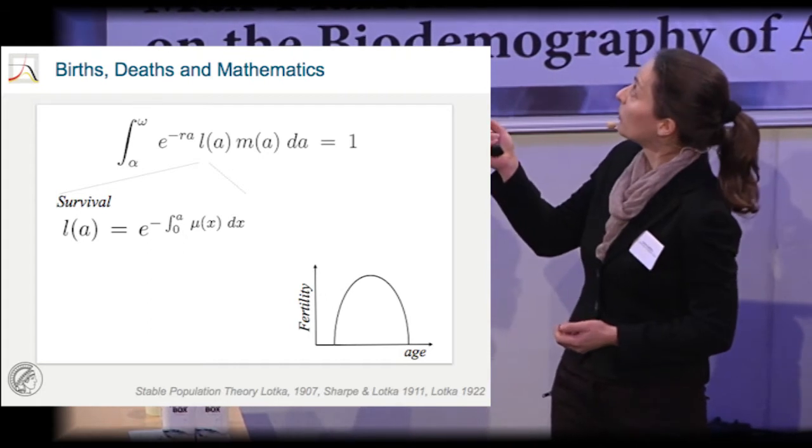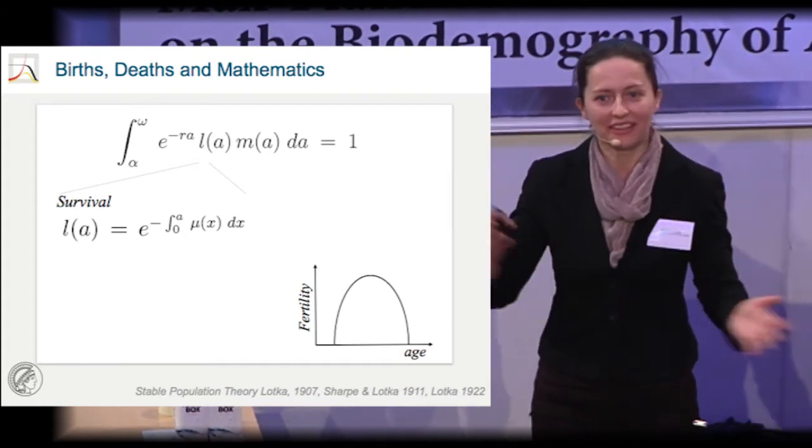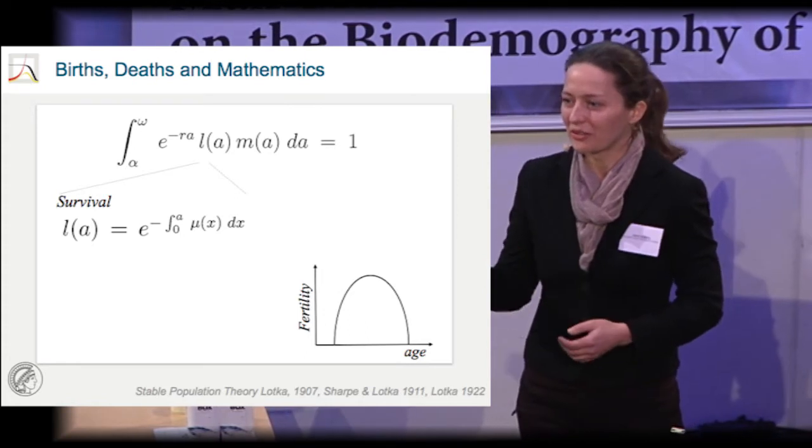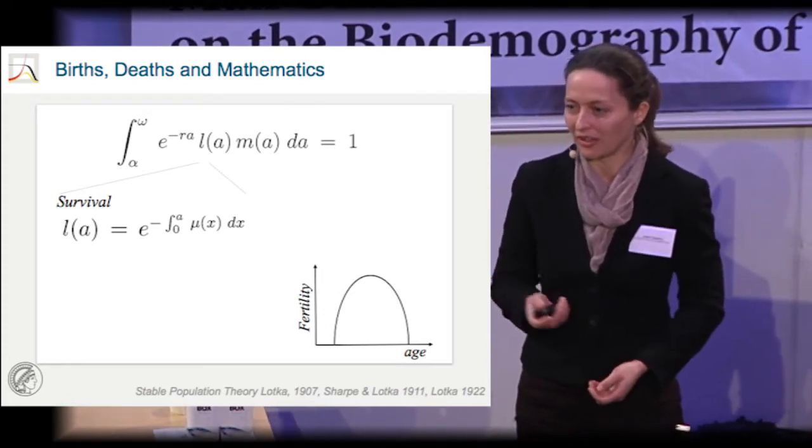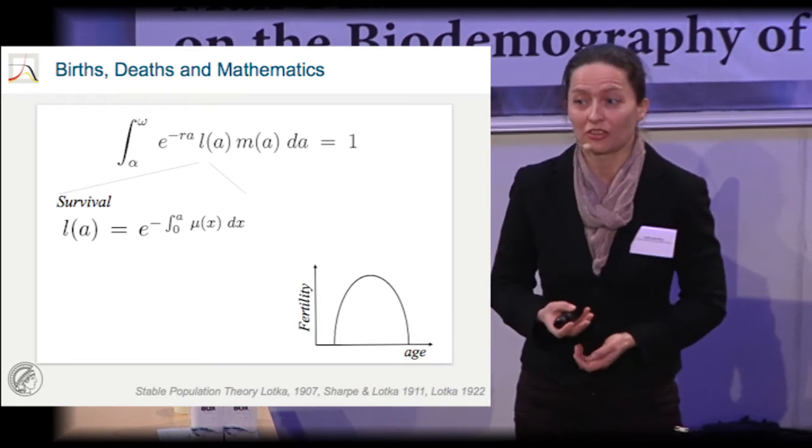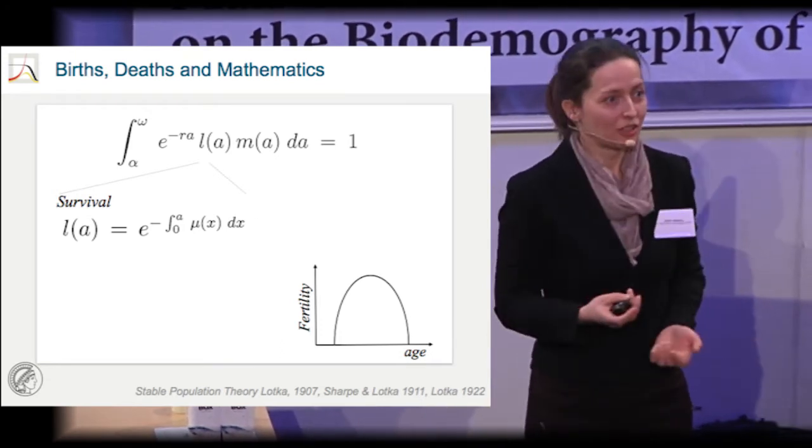And if you integrate from alpha to omega, from the beginning to the end, if you integrate all birth and survival, then you get how populations change over time. And then you can study population structure and population dynamics, and that's what demography is about.